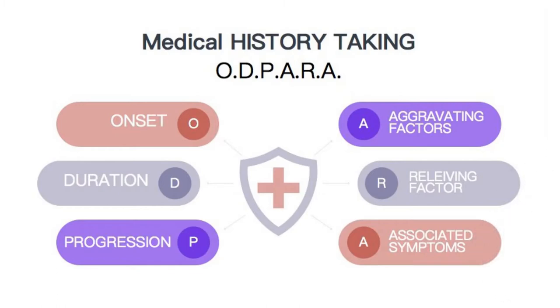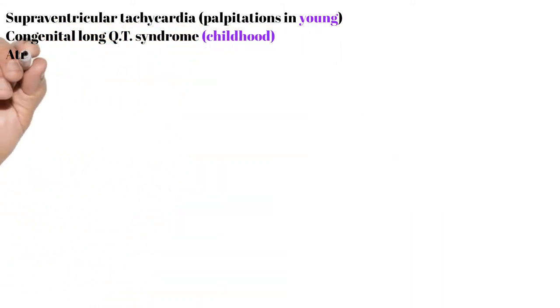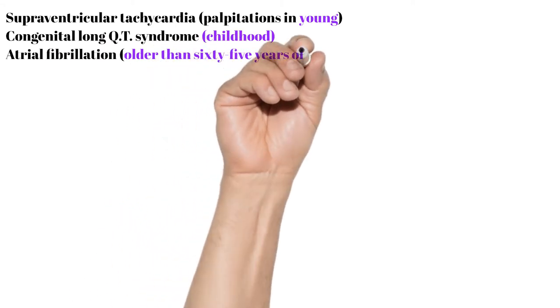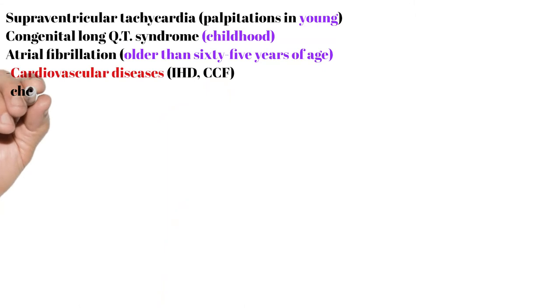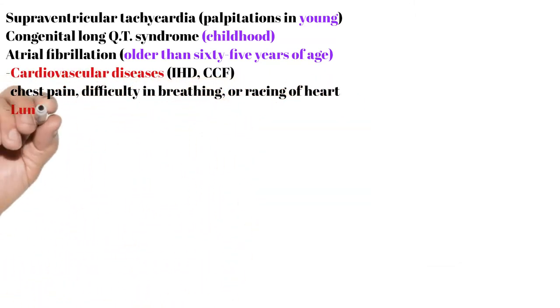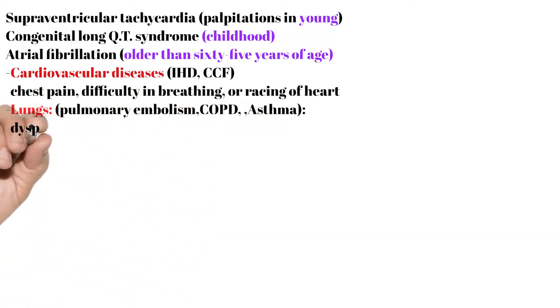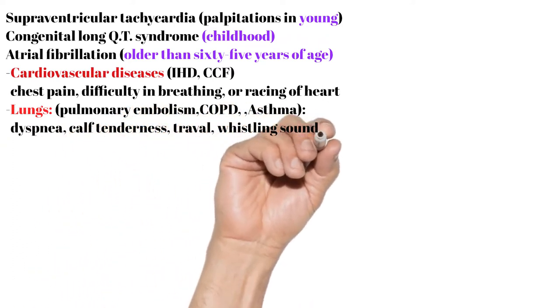Associated symptoms: age may provide a significant clue towards the diagnosis. Supraventricular tachycardia usually causes palpitations in a young patient. Meanwhile, congenital long QT syndrome may present in childhood and adolescence, whereas atrial fibrillation is more common in a patient older than 65 years of age.